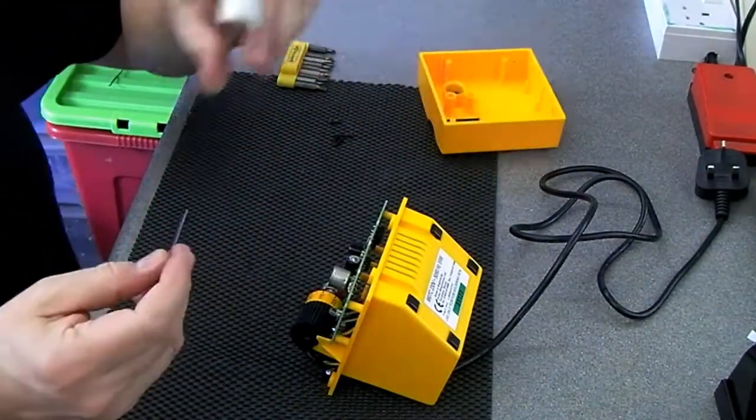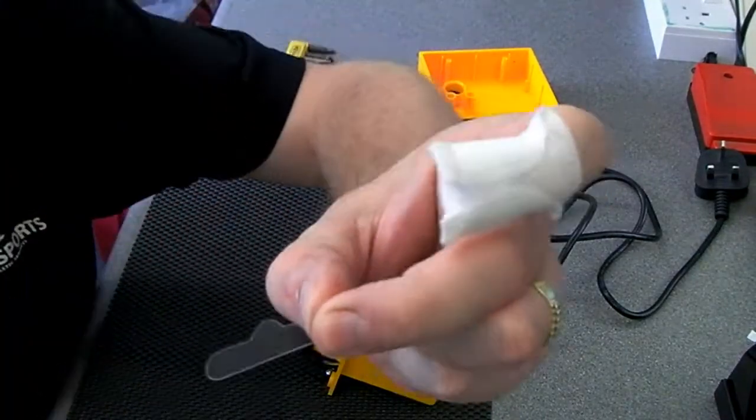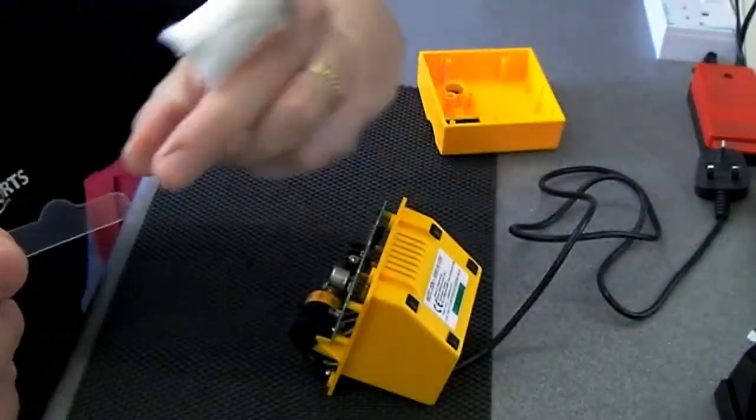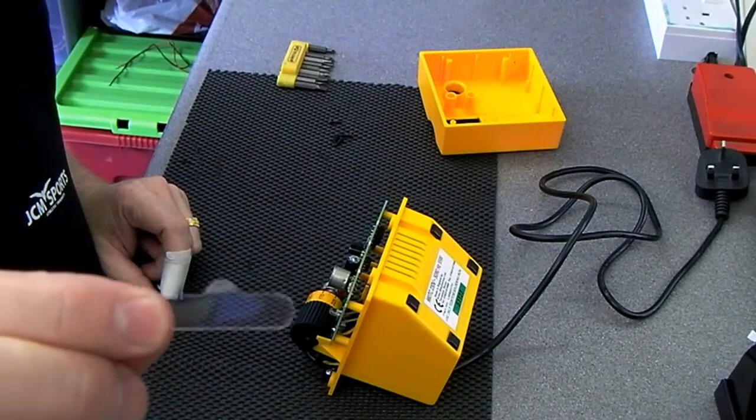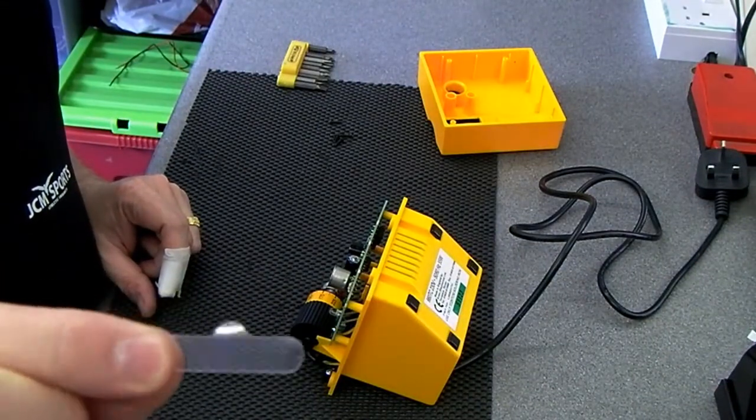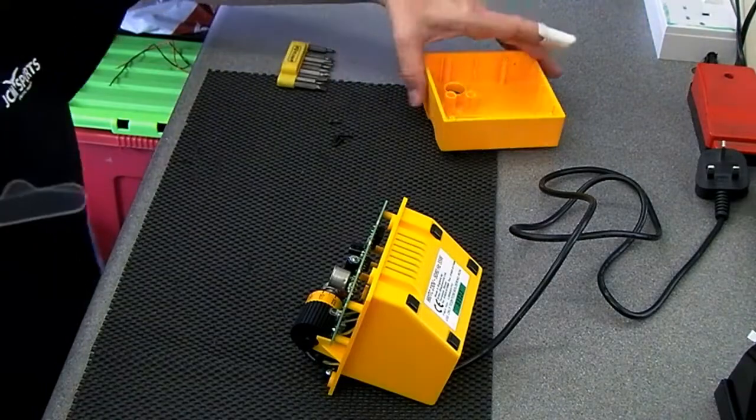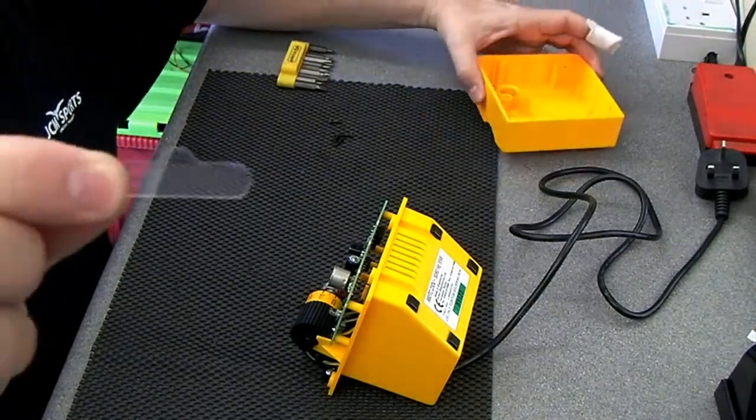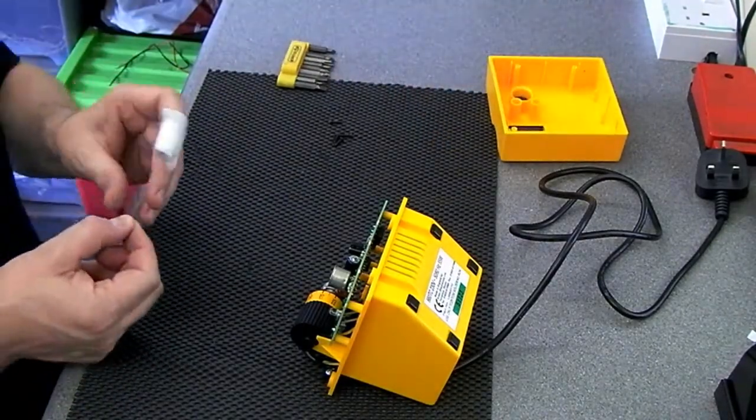And I was right, there was something rattling around inside this. There is a small, you probably won't be able to see this. Oh yes you can. That's just been punched out of a sheet of plastic. I don't know quite where that's come from originally but that was what was rattling around.